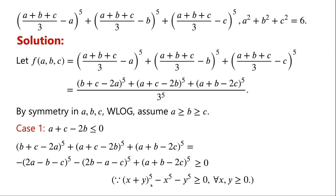Now, 2A minus B minus C is greater than or equal to zero, 2B minus A minus C is greater than or equal to zero, and A plus B minus 2C is greater than or equal to zero. We can show that the numerator is greater than or equal to zero, because (x plus y) to the power of 5 minus x to the power of 5 minus y to the power of 5 is greater than or equal to zero. This holds because (x plus y)^5 expands to x^5 plus y^5 plus other terms, which are all non-negative when x, y are greater than or equal to zero.